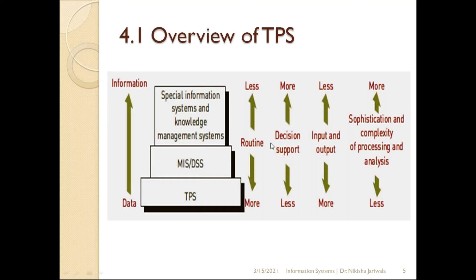So if we talk about routine information, we can use TPS for routine decisions. Then MIS and DSS, and then we talk about spatial information systems. If we talk about decision support, then TPS has less of that because TPS is just a processing system - it processes transactions. After that, MIS is used for daily routine decisions. In DSS we also take decisions. In GDSS we take decisions in a more concrete manner. If we talk about spatial information systems and knowledge management systems, then we talk about higher-level decision support.